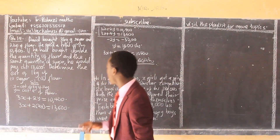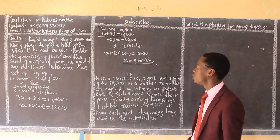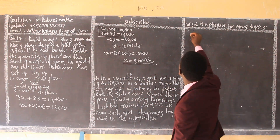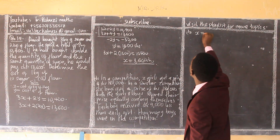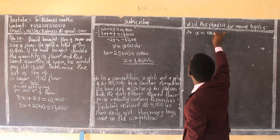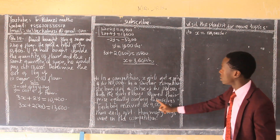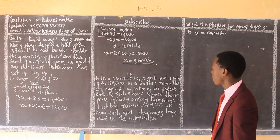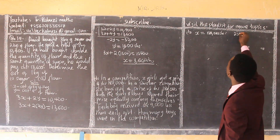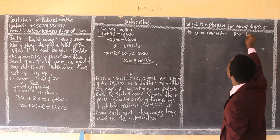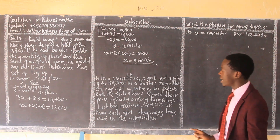Now we come to part b. In a competition, x girls got a prize of some shillings, and in the same competition, two x boys also received the same total amount of prize money.